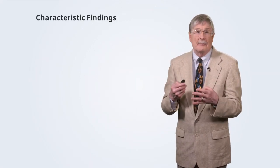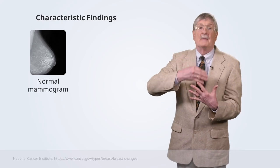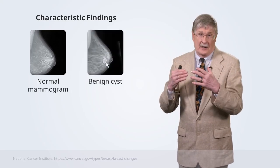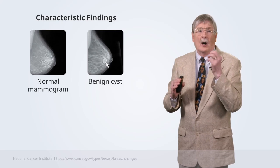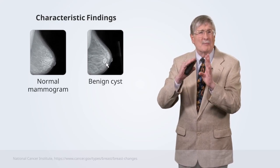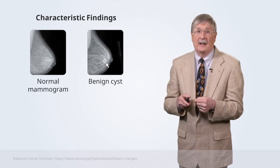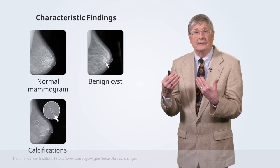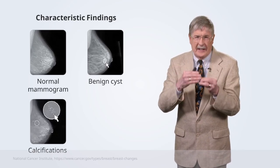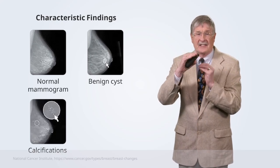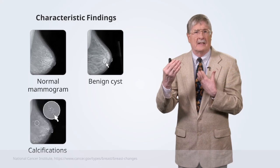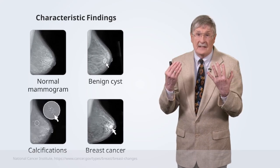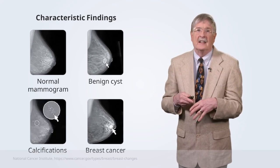Regarding characteristic findings on a mammogram: a normal mammogram shows a distribution of mesenchymal elements, fat, vessels, and parenchyma. Benign cysts, which are more common than malignancy, are typically smooth, uniform, rounded structures that can be mobile within the breast. Breast calcifications occur frequently with fibrocystic change or with malignancy, so the mammographer must carefully evaluate areas of microcalcifications — it's about 50-50 between benign and malignant causes. Breast cancer tends to appear as an irregular, radiodense, stellate, crab-like lesion that radiates into the surrounding tissue.